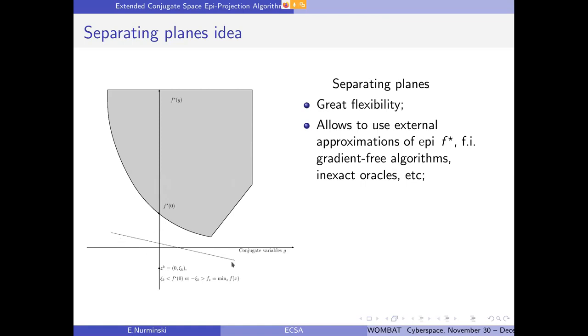If this is a strict separation, then we in any way improve our initial solution and move into the direction of this intersection. It is probably not the most efficient way but it has great flexibility because there are many ways we can construct these separating planes. Also, it allows us to use some kind of external approximation of epigraph. If we separate our initial point from this outer approximation of epigraph, we separate also this two point obviously, and then we can move further to our decision.